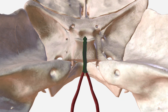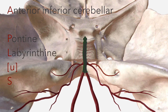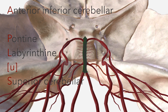I like to remember the branches of the basilar artery with the mnemonic A+PLS. That's A for anterior inferior cerebellar arteries, P for pontine arteries, L for labyrinthine arteries, and S for superior cerebellar arteries.